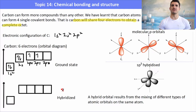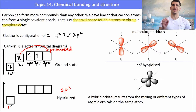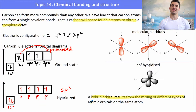What carbon does is form what is known as a hybrid — where the energy of the S and the P become the same. It promotes one electron from the 2s orbital into the free 2pz orbital, forming an S and 3P hybrid. A hybrid orbital results from the mixing of different types of atomic orbitals on the same atom. So here we have an S and three P orbitals all with the same energy, which means it is now a hybrid orbital known as SP3.